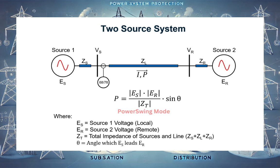This power swing — the uncertain behavior of the power system with impedance changes — is seen by impedance protection relays on the transmission line. These relays might incorrectly interpret the swing as a fault. To handle this, impedance relays have a power swing feature that detects the condition and treats it as a power swing rather than a fault, blocking the impedance operation for a certain period of time.